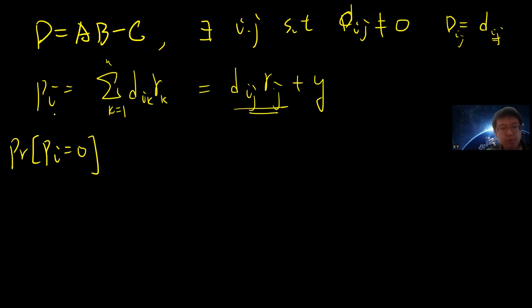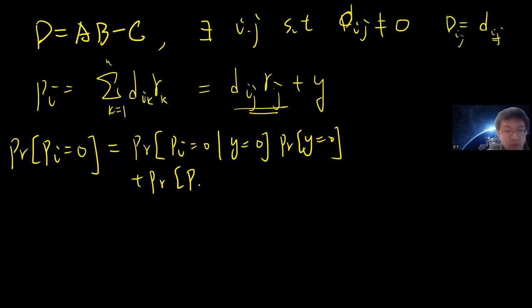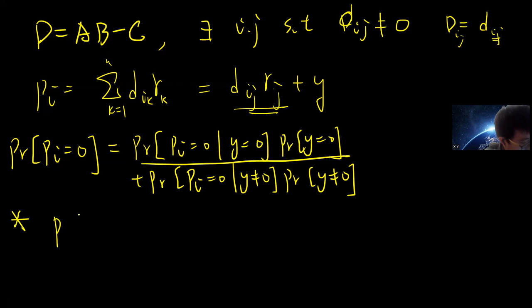Because if P_i is non-zero, then I got it. So P_i equals 0 can be separated as whether y is 0 or not. So I can write P_i equals 0 conditionally on y equals 0 times probability of y equals 0, plus probability of P_i equals 0 given y is non-zero times the probability y is non-zero. So now let's check the first one.